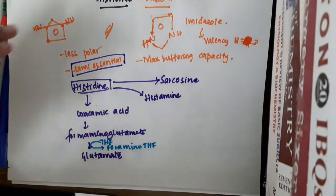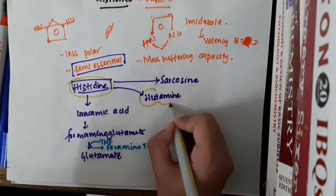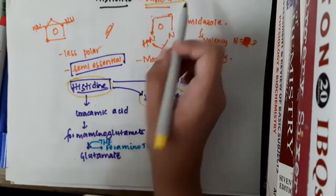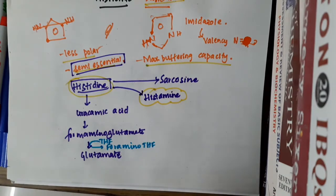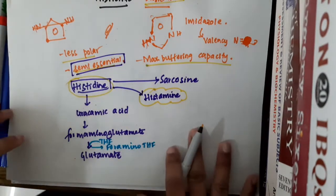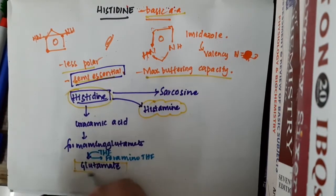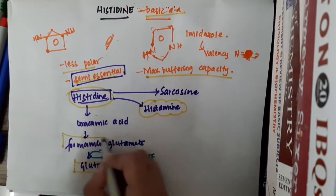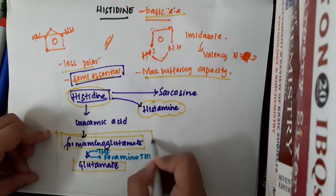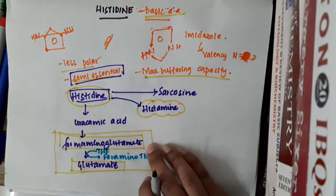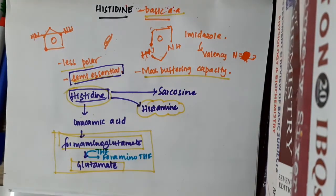During this conversion of formiminoglutamate to glutamate, tetrahydrofolate gets converted to formaminotetrahydrofolate. What you should definitely remember is: histidine forms histamine, it is a basic amino acid, less polar, semi-essential, having maximum buffering capacity. Also important: histidine at the end gives rise to glutamate, with formiminoglutamate as an intermediate.